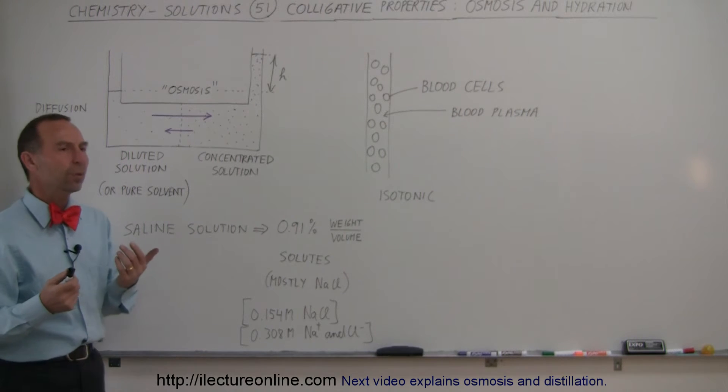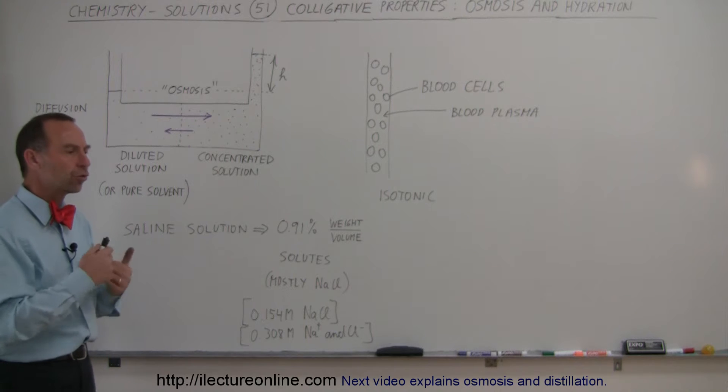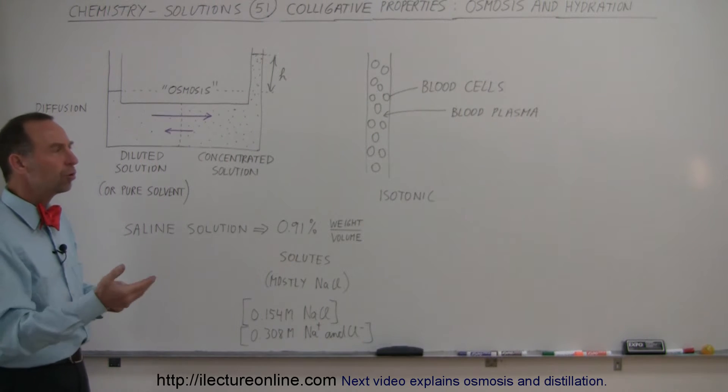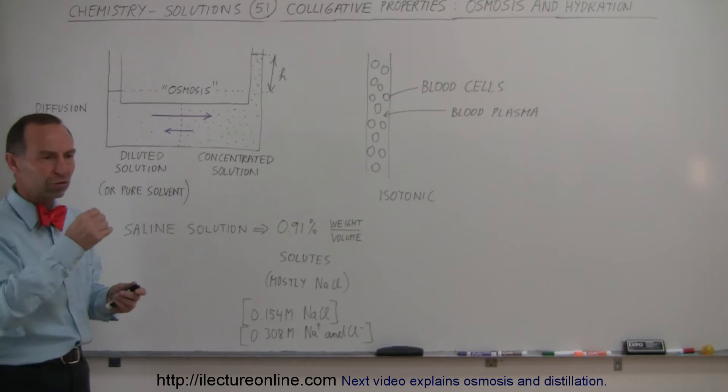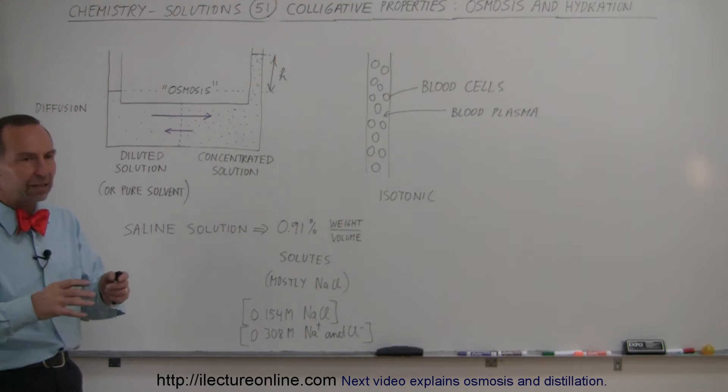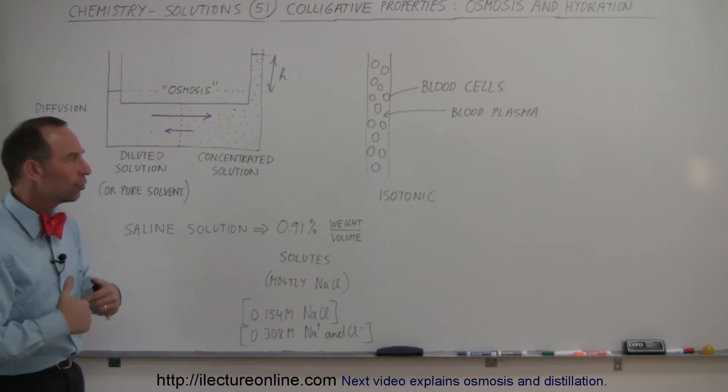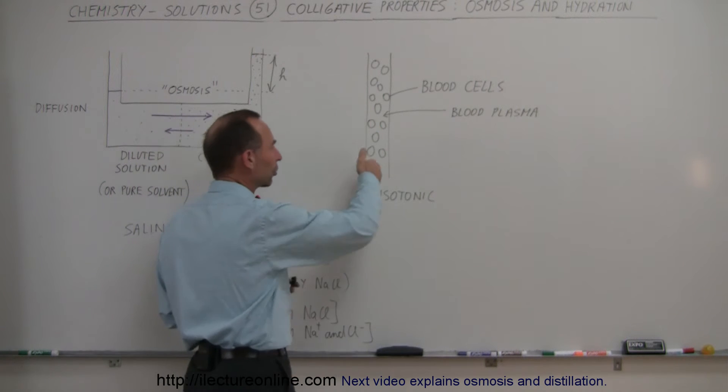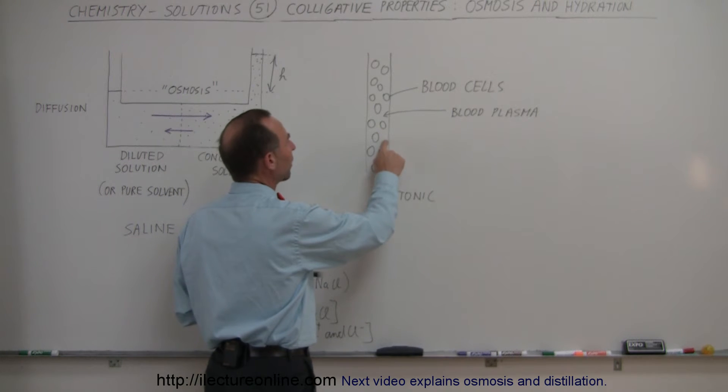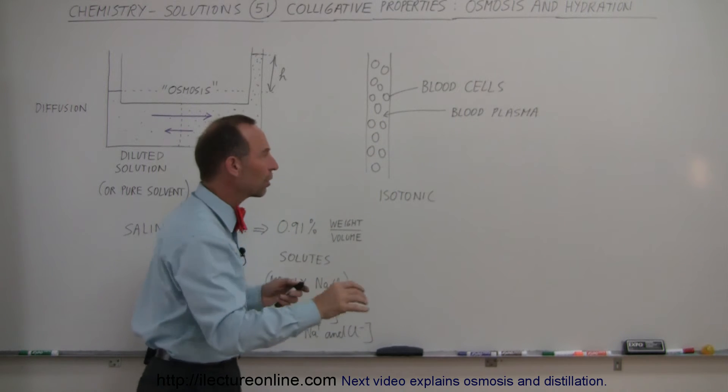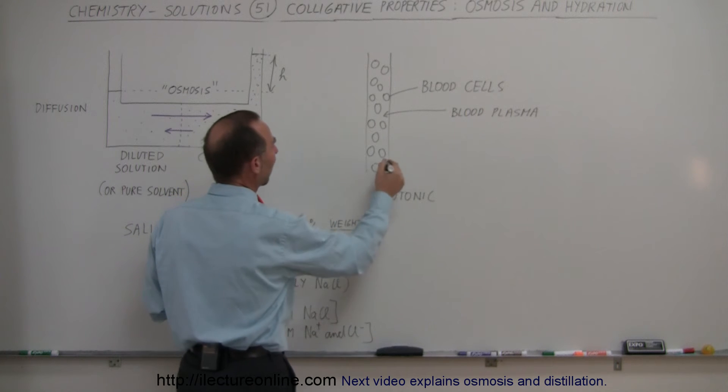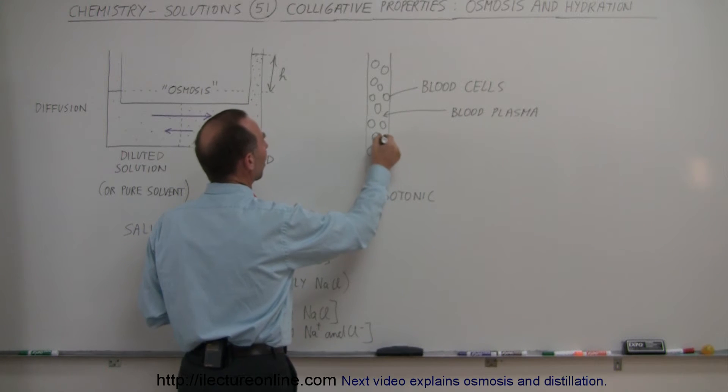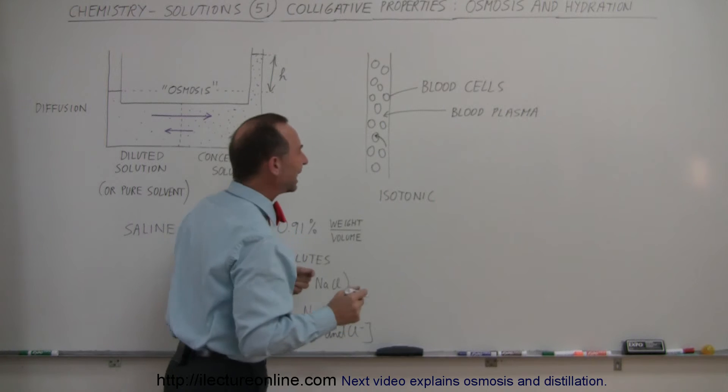What happens when you become thirsty and drink too much water that contains no electrolytes? You drink half a gallon, a gallon of water. All that water gets absorbed through the circulatory system, and the blood plasma will now be lower in concentration than the cells. So you have a net migration of water into the cells.